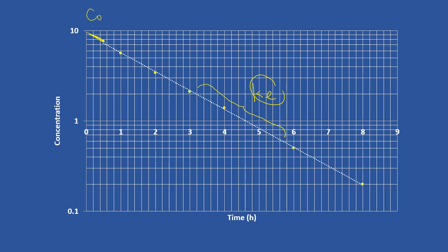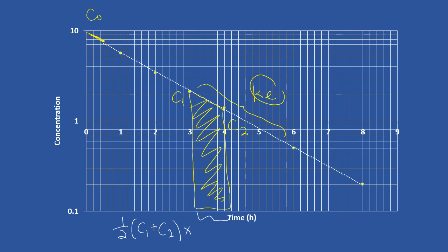I want to remind you about the trapezoidal rule. The concept is cutting all time points into tiny pieces and adding all the areas together. For example, to calculate the area for the time interval from 3 to 4 hours, the equation is: half times (C1 plus C2) multiplied by the height — where C1 and C2 are the concentrations at those time points and the height is the time interval, in this case one hour. By adding all these pieces together you find the AUC.